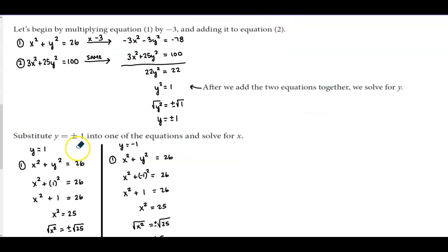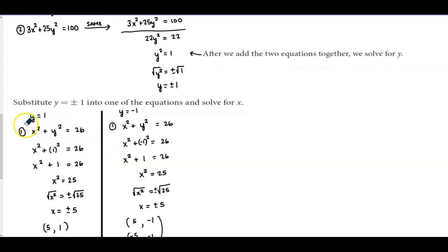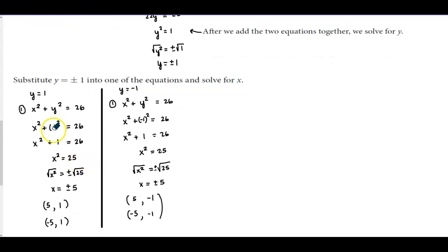We're going to substitute those values into one of the equations and solve for x. We'll choose equation 1 — it doesn't matter which one we choose in this scenario. When y = 1, we get x² + (1)² = 26, and squaring 1 gives positive 1.